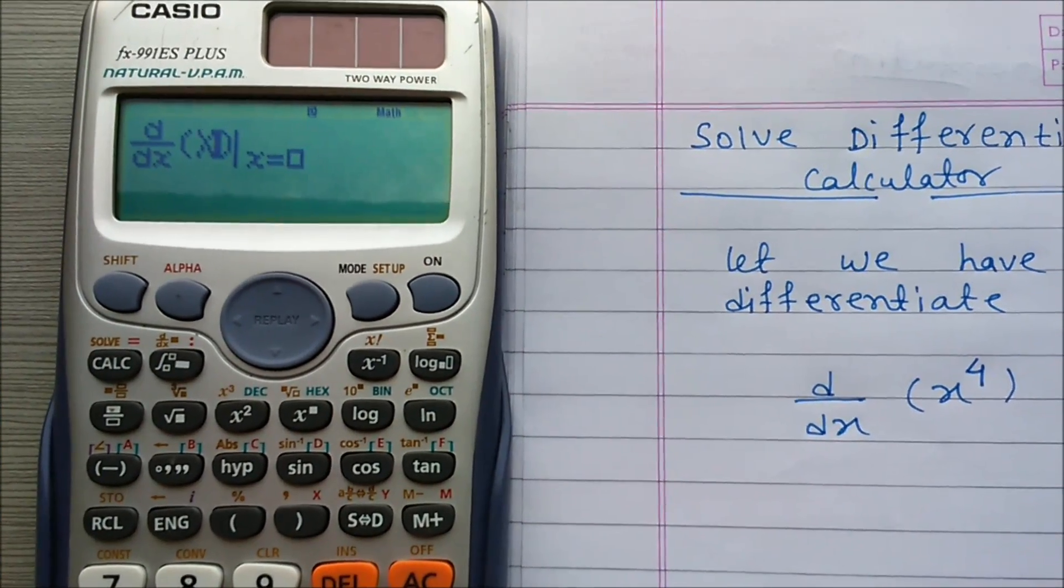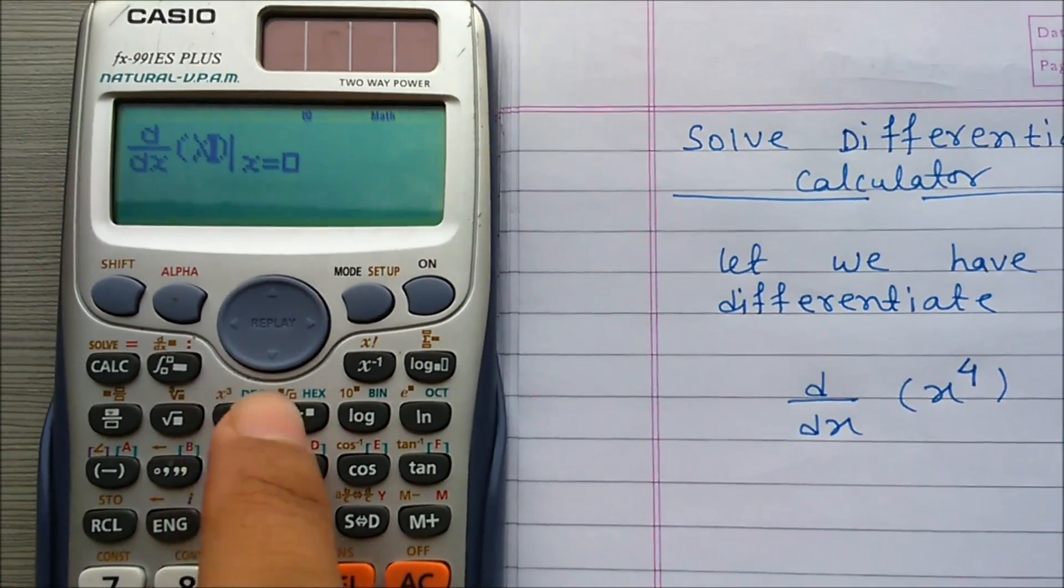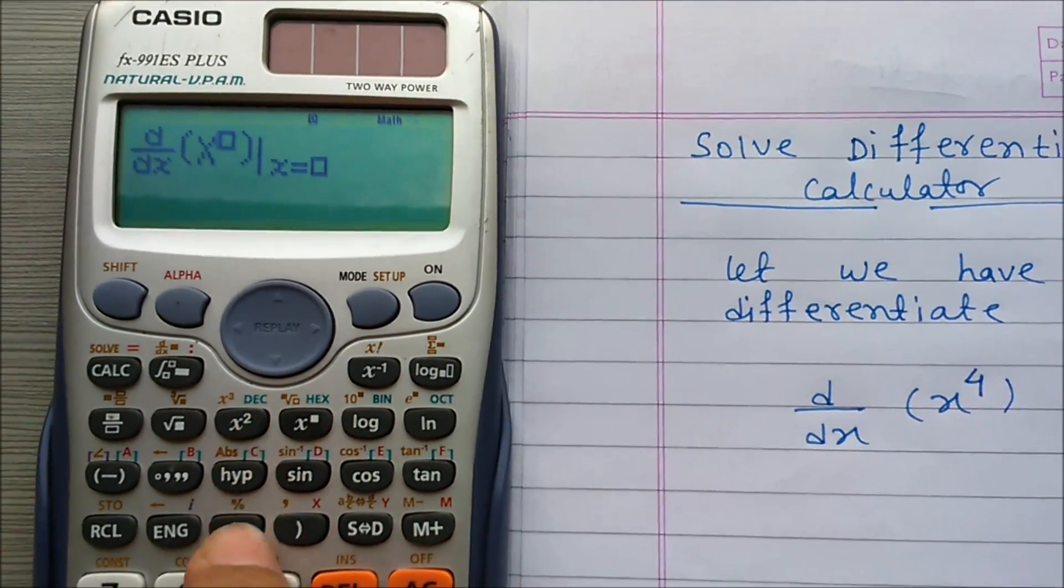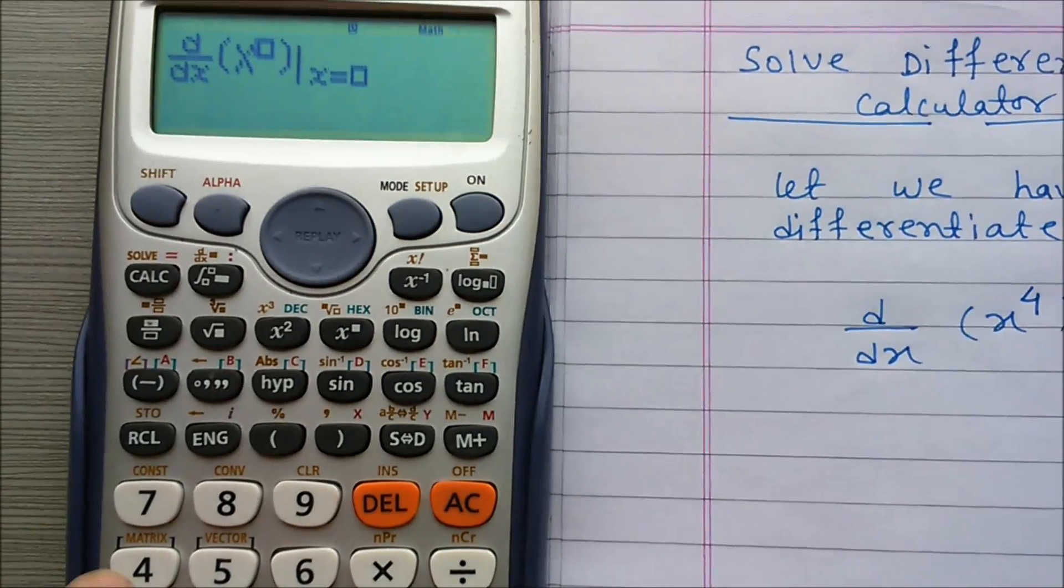Now here is x to the power 4. So for power to the power 4, press this button and type 4.